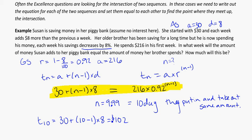So on the 10th week, she will put $102 into her bank account, and her brother will actually spend $102. So that answers our question there.